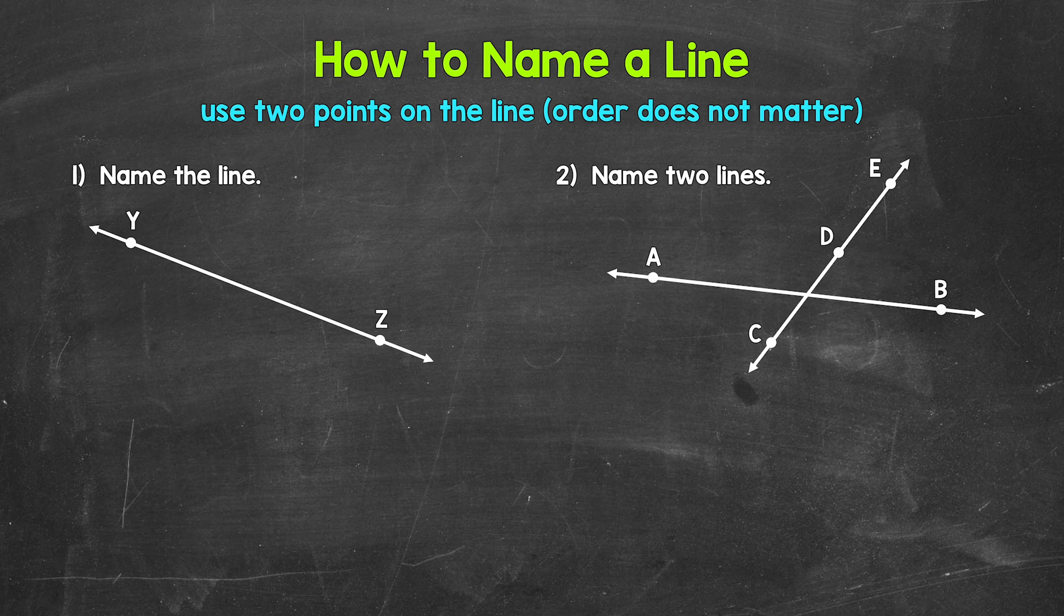Now we can name a line by using two points on the line. For example, in number one, we have point Y and point Z on that line. So let's use those to name the line. All we need to do here is write the points, so Y and Z.